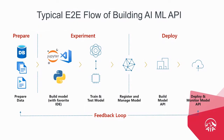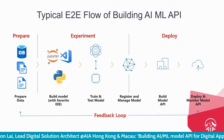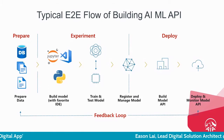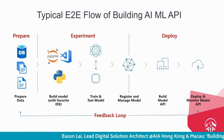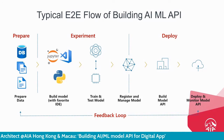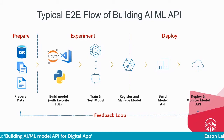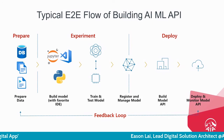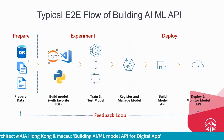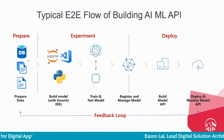Let me share more details about the backend — the end-to-end flow for building an AI and ML API. Before you have an API you can consume, from left to right, we need to prepare data. We have traditional relational databases — SQL, Postgres, MySQL — and we need to prepare the data. In data science, I would say 80% of the time is spent cleaning and preparing data before we have a sophisticated model.